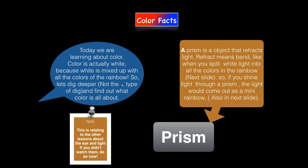A prism is an object that reflects light. Reflect means bend. They can split white light into all the colors in the rainbow. It's just a mixed slide. So, if you slide in the light through a prism, the light would also come as a mini rainbow. Yay, that was a mixed slide.